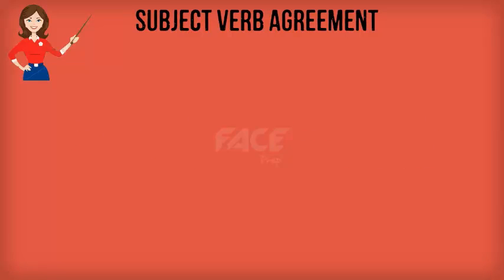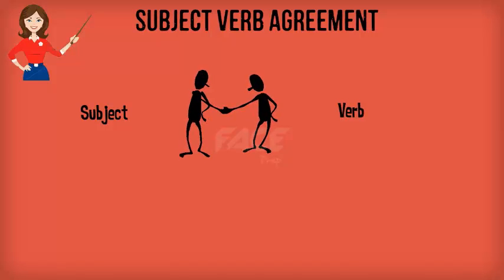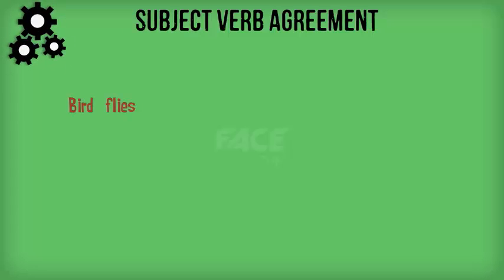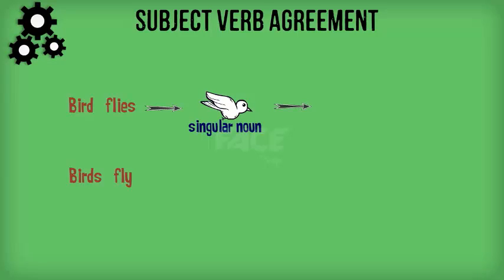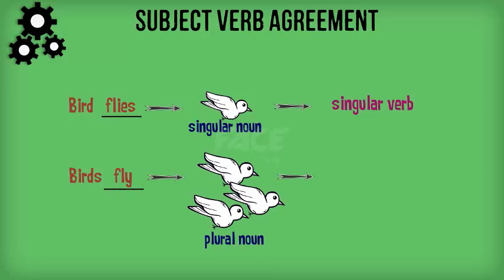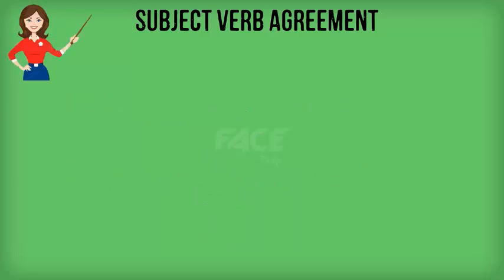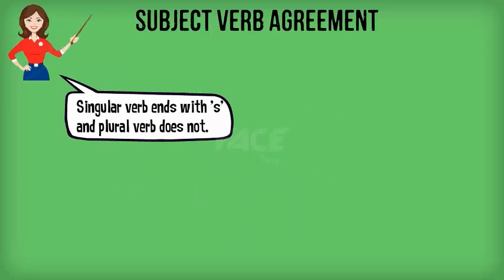Subject-Verb Agreement. As the name suggests, in a sentence we should always ensure that the subject and the verb agree with each other in number and person. For example: 'Bird flies' versus 'Birds fly.' In the first sentence, the subject 'bird' is singular and hence a singular verb 'flies' is used. In the second sentence, the subject 'birds' is plural and hence we use a plural verb 'fly.' Note that unlike nouns, a singular verb ends with an 's' and a plural verb doesn't.